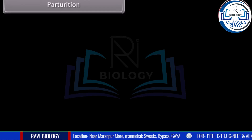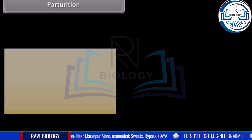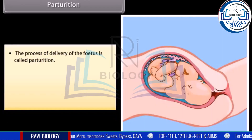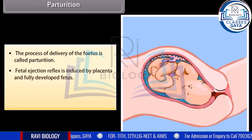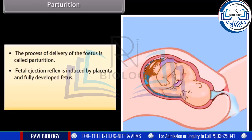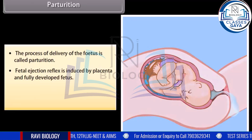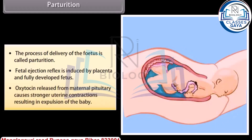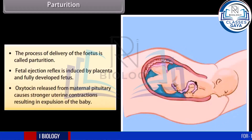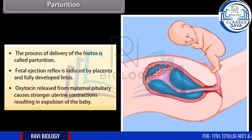Parturition is the process of delivery of the fetus. Fetal ejection reflex is induced by the placenta and the fully developed fetus. Oxytocin released from the maternal pituitary causes stronger uterine contractions, resulting in expulsion of the baby.